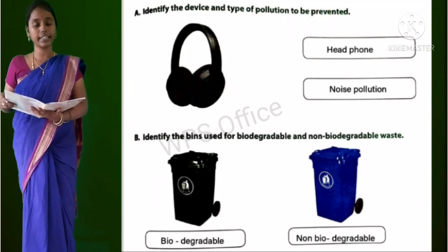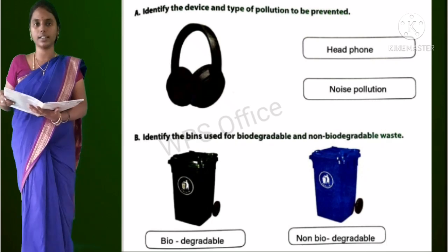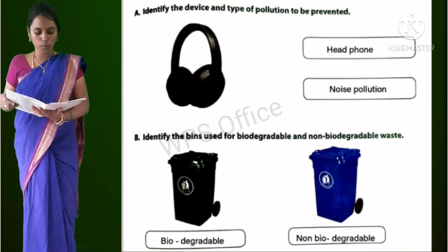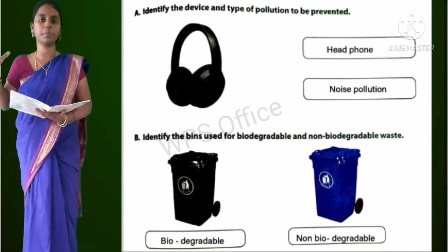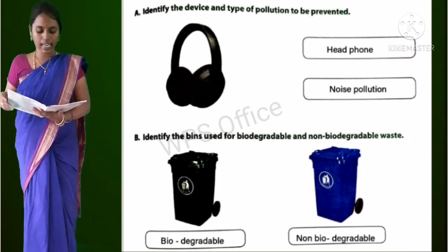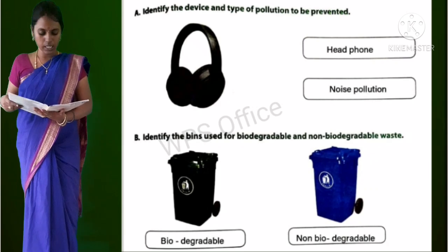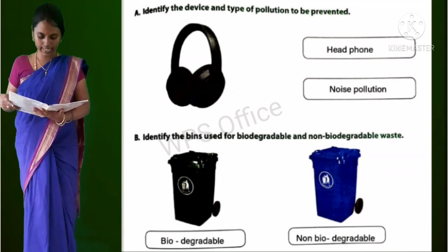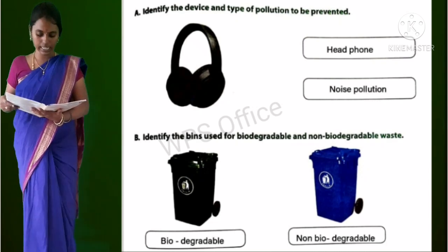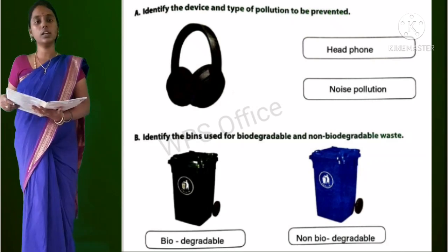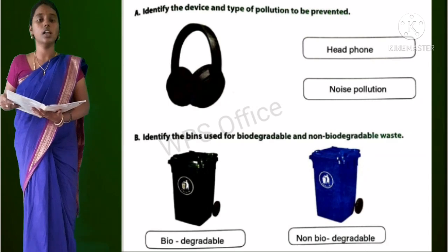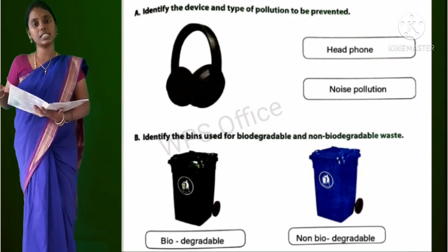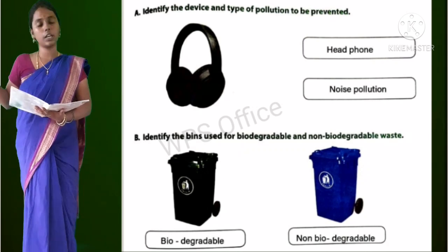Worksheet 3, Section A: Identify the device and type of pollution to be prevented. The picture is a headphone, and noise pollution can be prevented by using headphones. Section B: Identify the bins for biodegradable and non-biodegradable waste. The green bin is for biodegradable waste - waste which can be recycled. The blue bin is for non-biodegradable waste - waste which cannot be recycled.